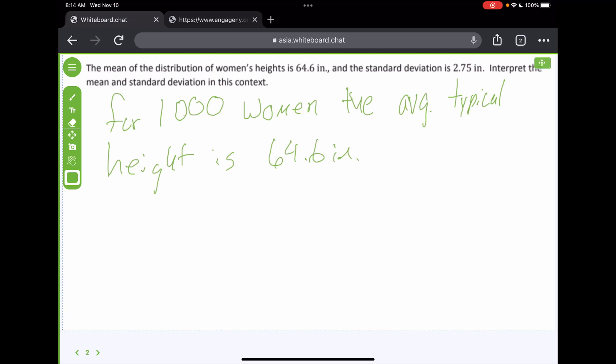Now, what does the standard deviation tell us? Remember, what is standard deviation? It's a typical distance away from the mean, all right? So, what does a standard deviation of 2.75 inches tell us? We would say the typical height is 2.75 inches away, away, away from the mean. Now, that's what the standard deviation tells us. That's what the mean tells us. Okay?